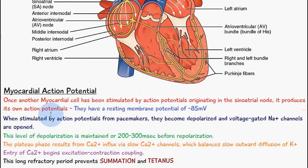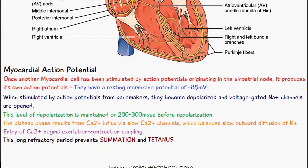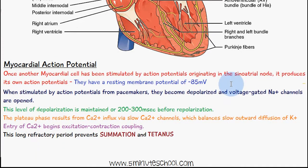This long refractory period prevents summation and tetanus. Summation is where we have several stimuli at once causing contraction, and tetanus is where we have muscle spasms. So this long refractory period prevents summation and tetanus.